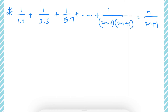The next question is: show that 1/(1·3) + 1/(3·5) + 1/(5·7) + ... + 1/[(2n−1)(2n+1)] = n/(2n+1), by using mathematical induction. Here, the nth term is already given as 1/[(2n−1)(2n+1)], so we can directly move to solving.